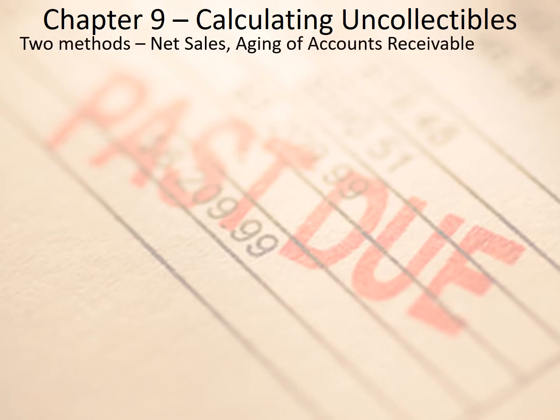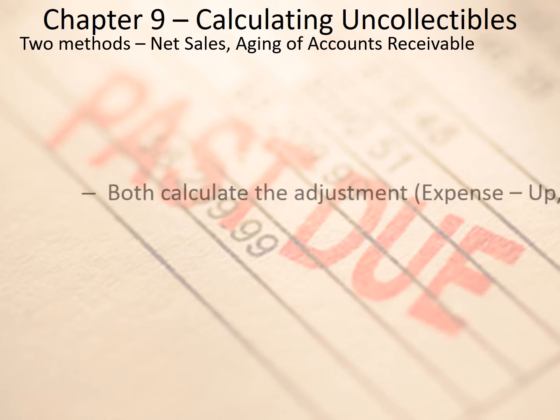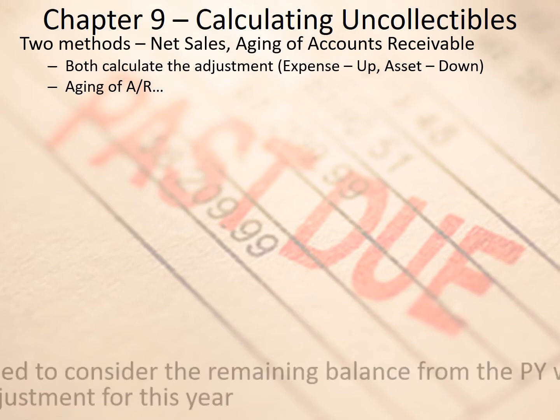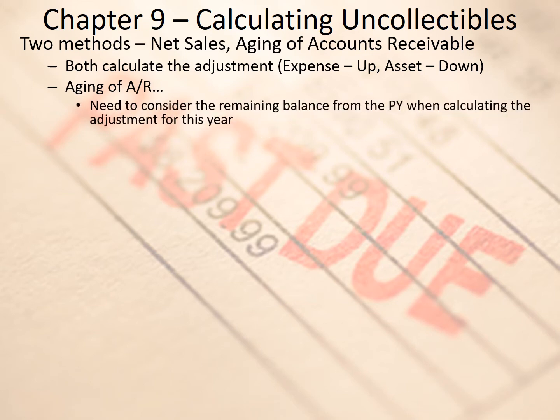When it comes to calculating your uncollectibles, there are two main methods: the net sales method and the aging of accounts receivable. Both do the same thing in terms of calculating the adjustment — making the uncollectible accounts expense go up and your asset, using the contra asset, go down. For the aging of accounts receivable, you need to consider the remaining balance from the prior year when calculating the adjustment for the current year.